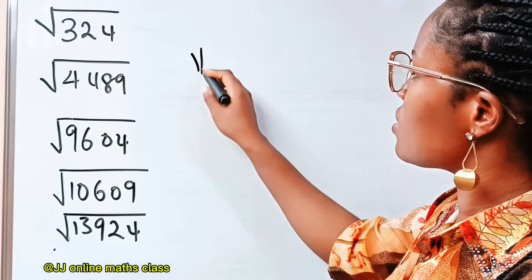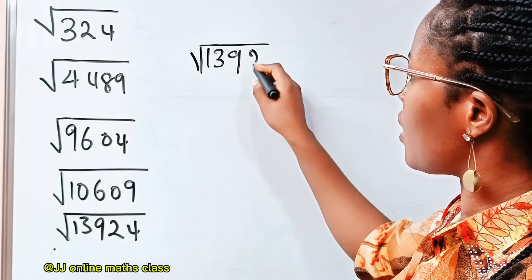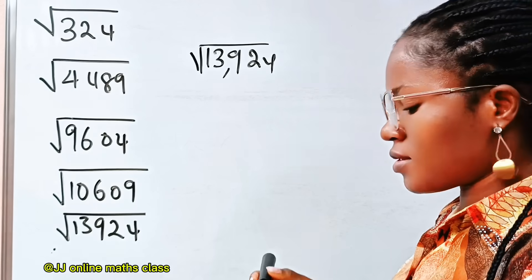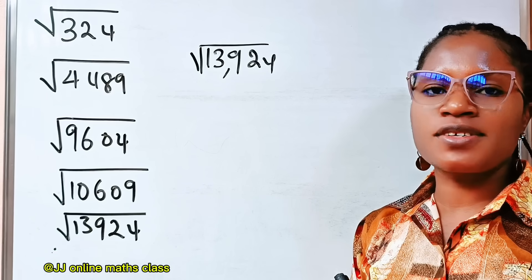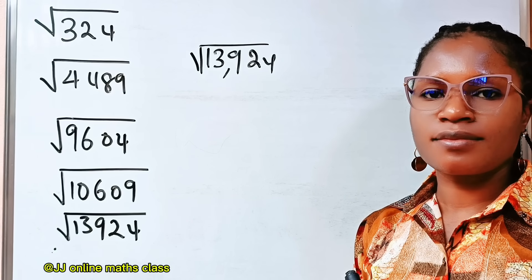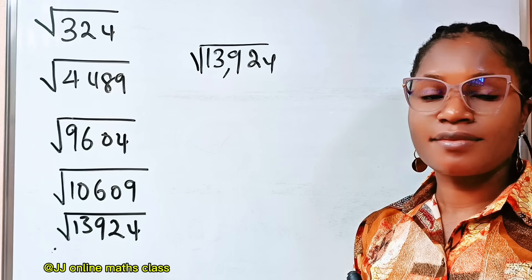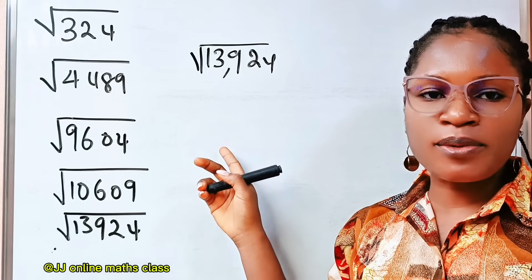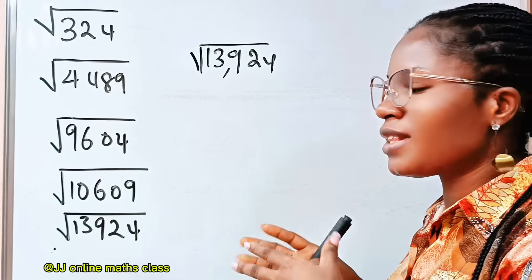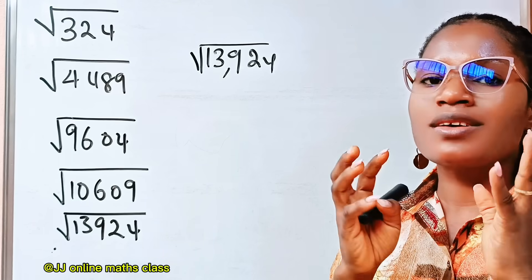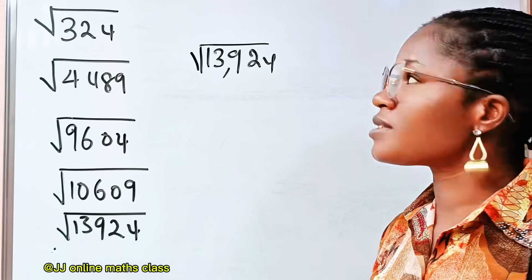If I give you 5 seconds to find the square root of 13,924, can you do that? Let's pause and wait for 5 seconds. Time is up. Were you able to get the solution? If not, then this method that I'm about to show you is going to give you this answer within 5 seconds.